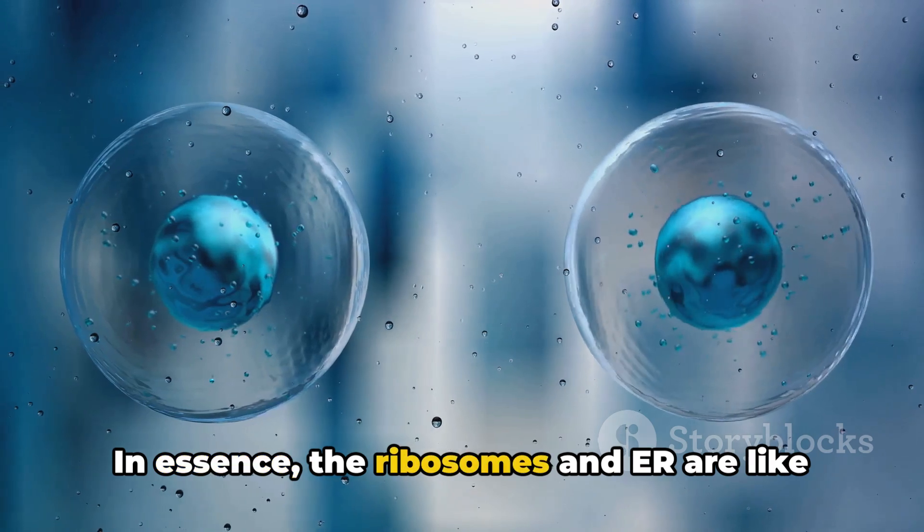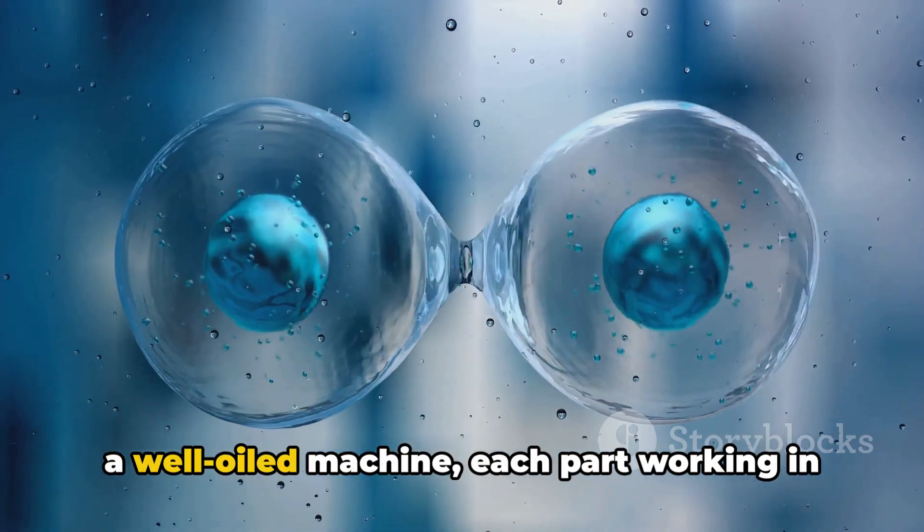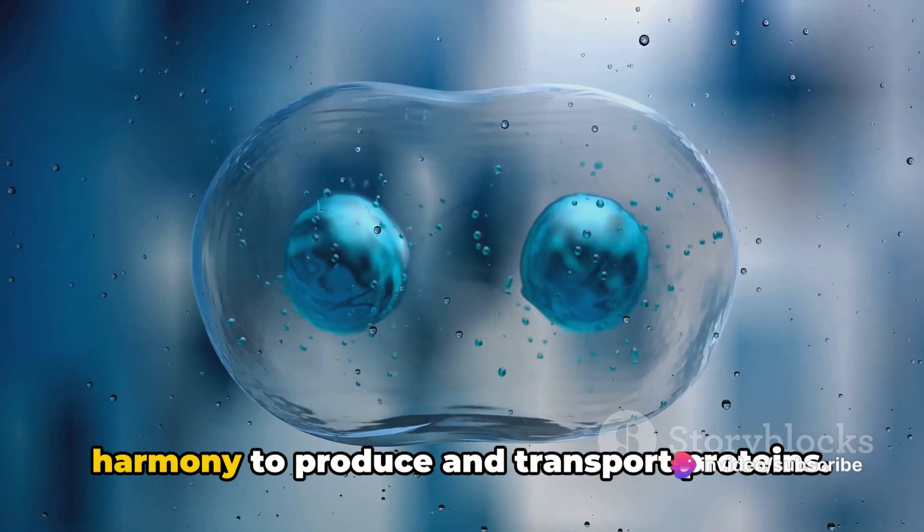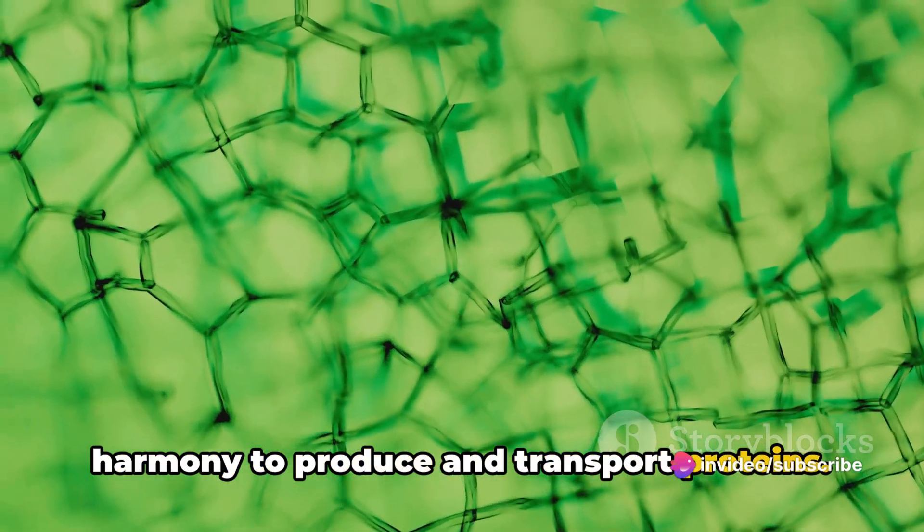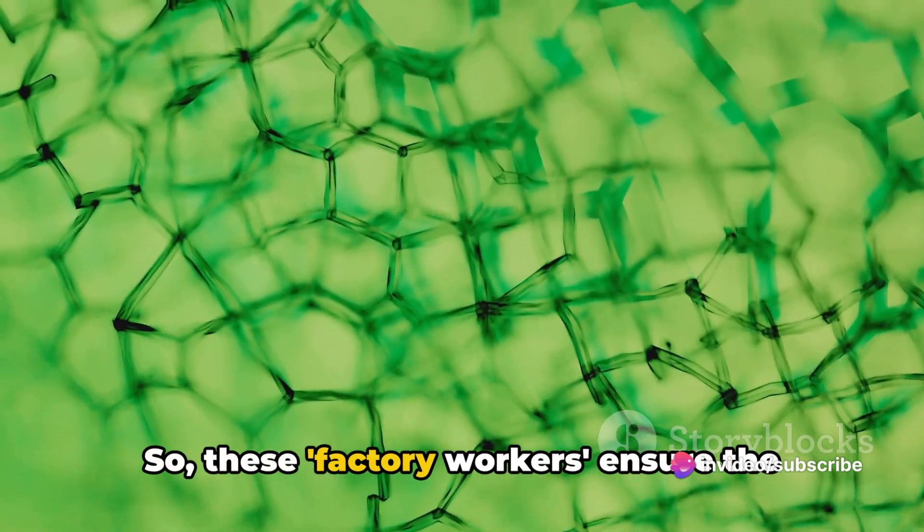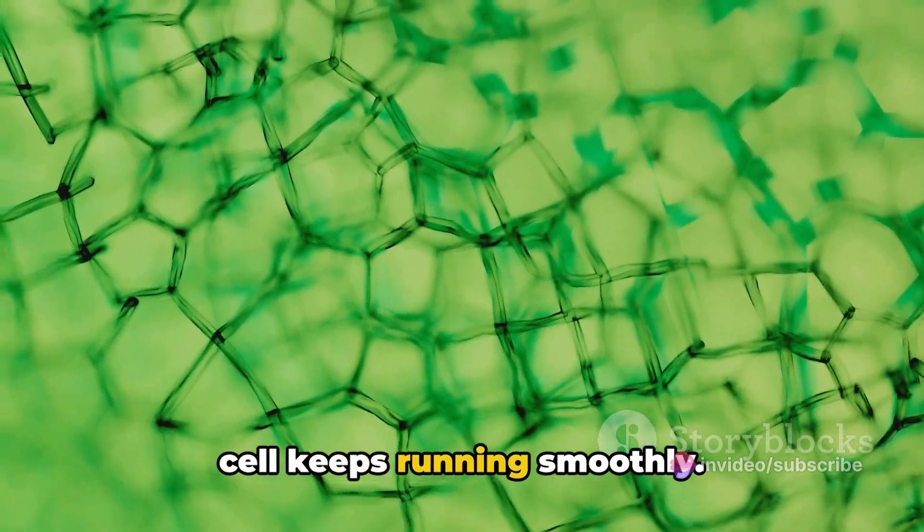In essence, the ribosomes and ER are like a well-oiled machine, each part working in harmony to produce and transport proteins. These factory workers ensure the cell keeps running smoothly.